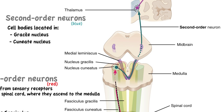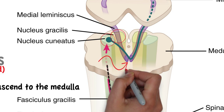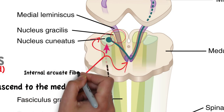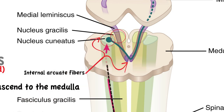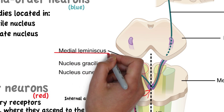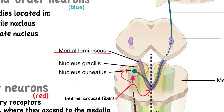The axons of the second order neurons exit the nuclei and are referred to as the internal arcuate fibers, as they travel ventrally and medially to cross the midline at the same level as the nuclei. After crossing the midline, these fibers form the medial lemniscus, which travels rostrally to the thalamus.